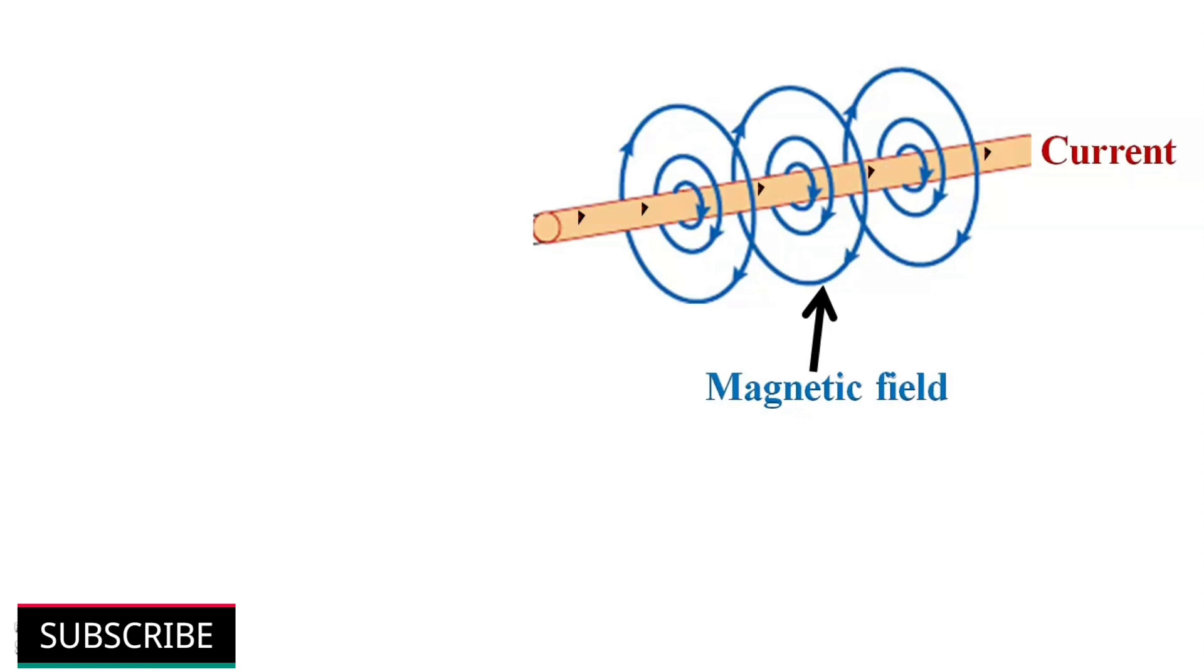Whenever current flows through a conductor, a magnetic field develops around it. The strength of the magnetic field depends upon the value of current passing through the conductor.